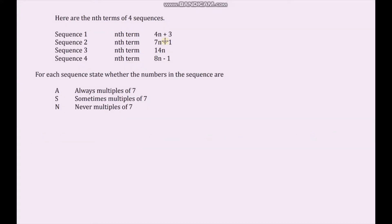Now let's look at this question: here are the nth terms of four sequences. For each sequence, state whether the numbers are always a multiple of 7, sometimes a multiple of 7, or never multiples of 7. For sequence 1, let's do a bit of trial and error and list some terms in the sequence.